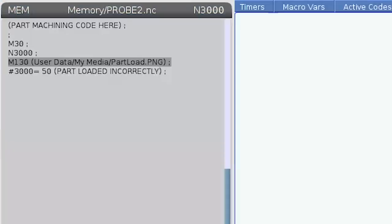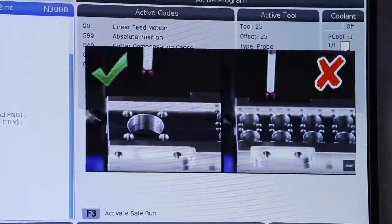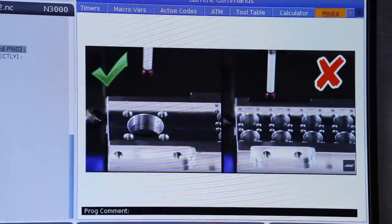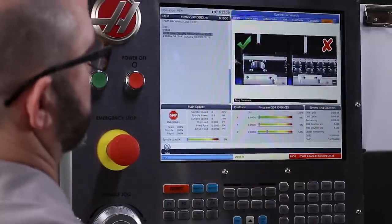We can even add an M130 media file, a media path to the program if we want to give the operator some more information to help them through the problem.